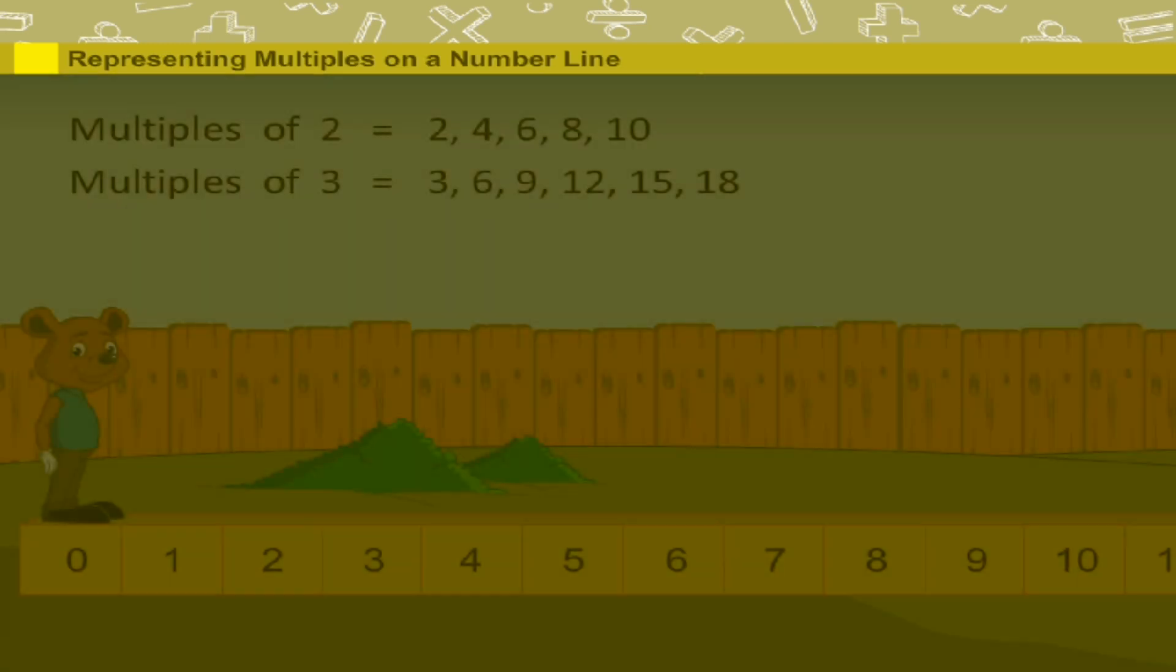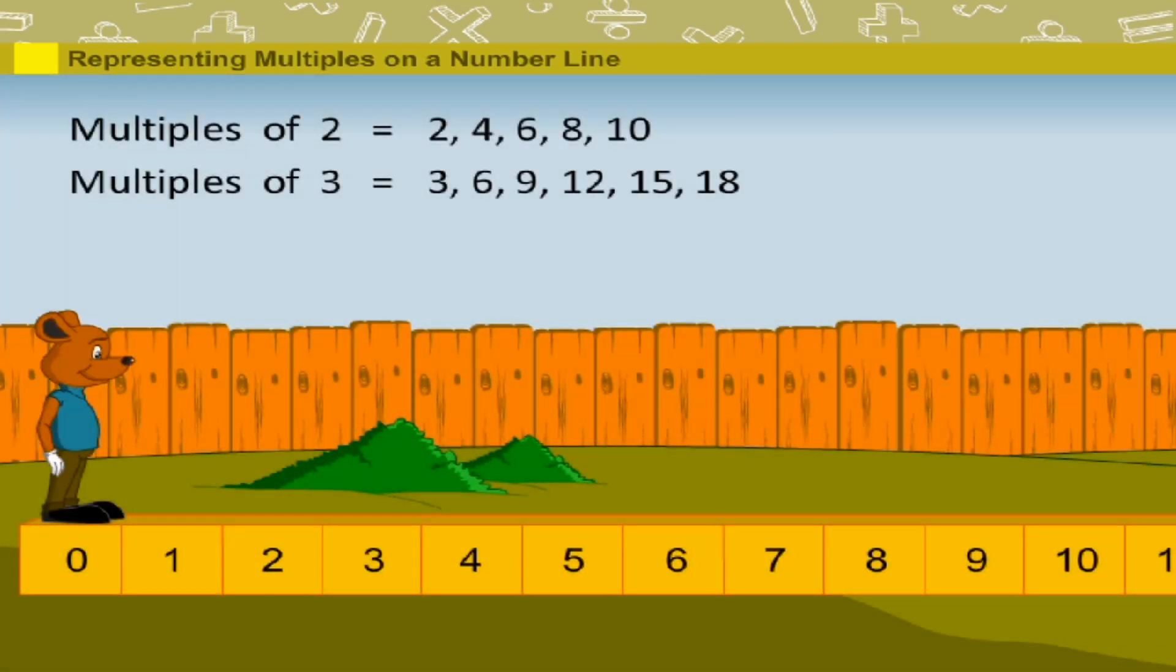Representing multiples on a number line. Robbie Mouse is ready to jump on the number line. He stands on zero and leaps to number two and then to number four.